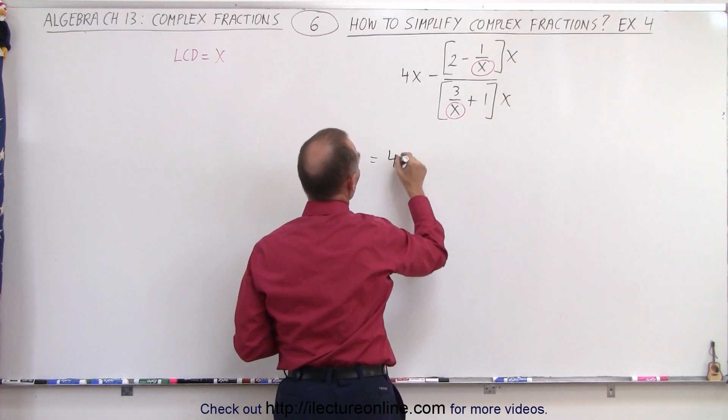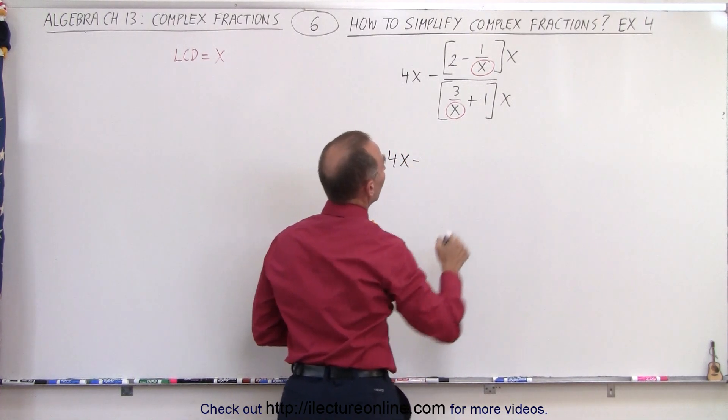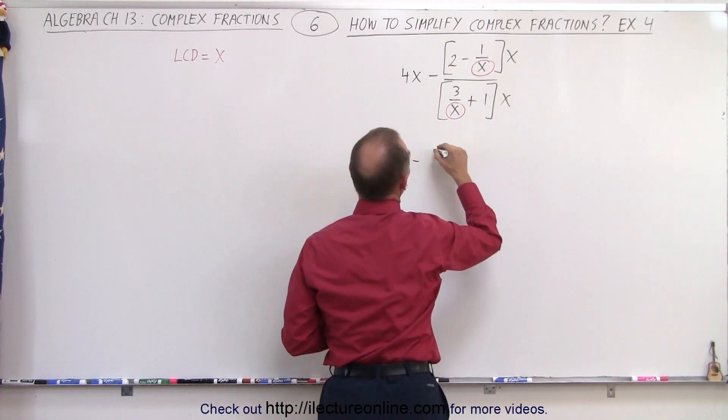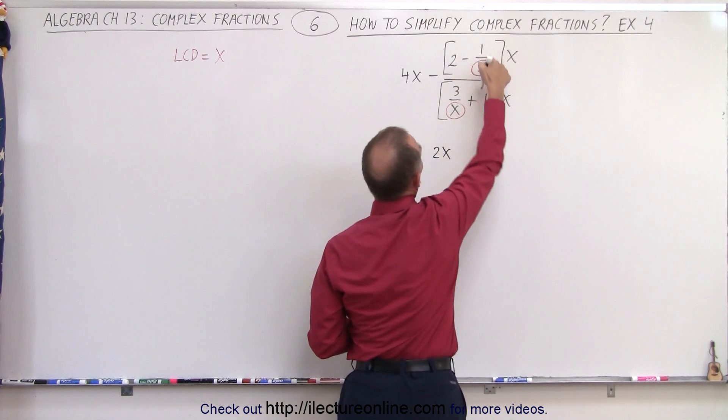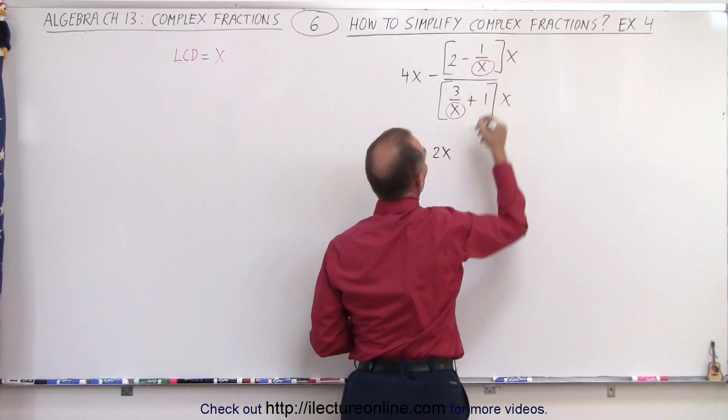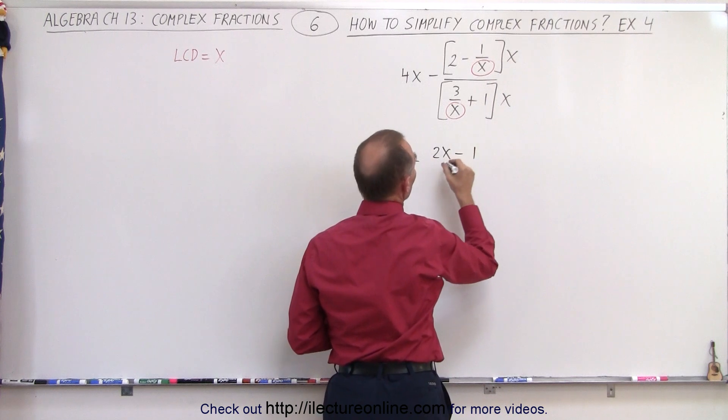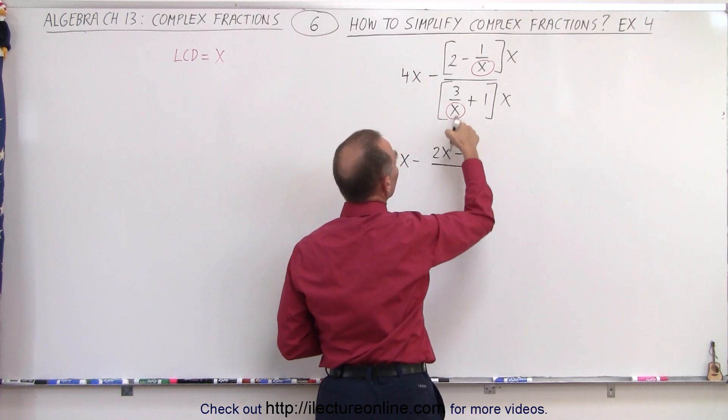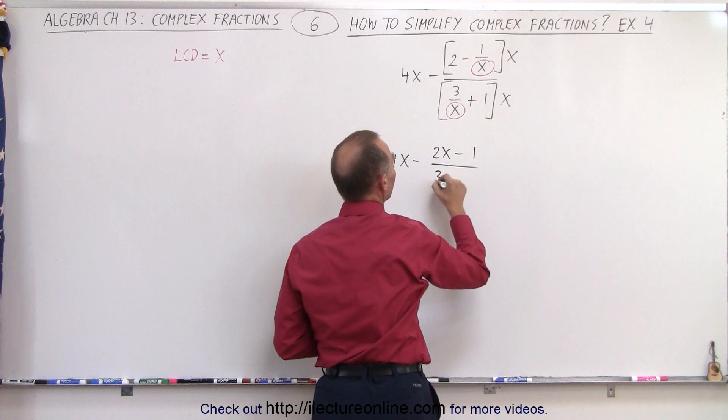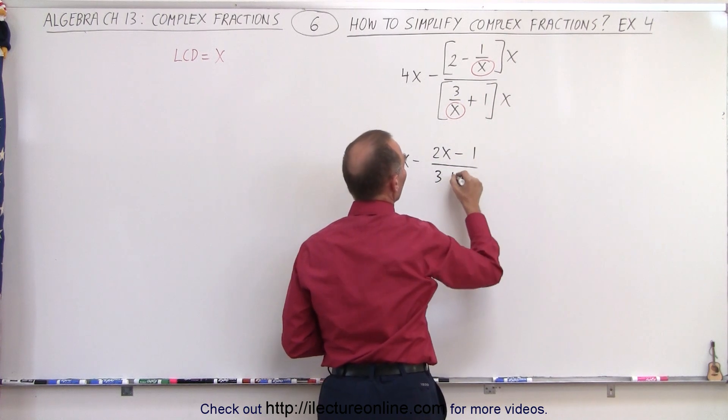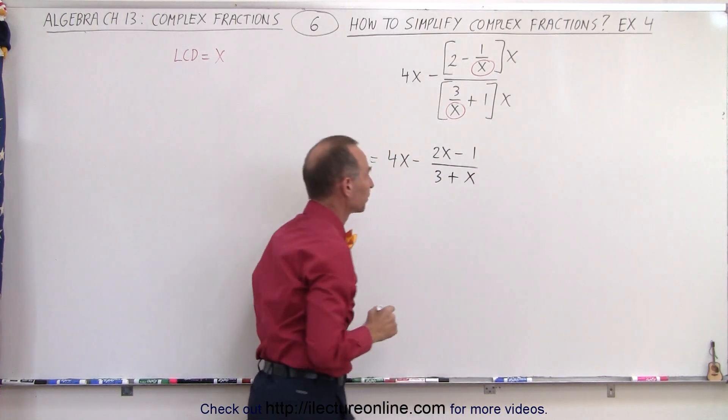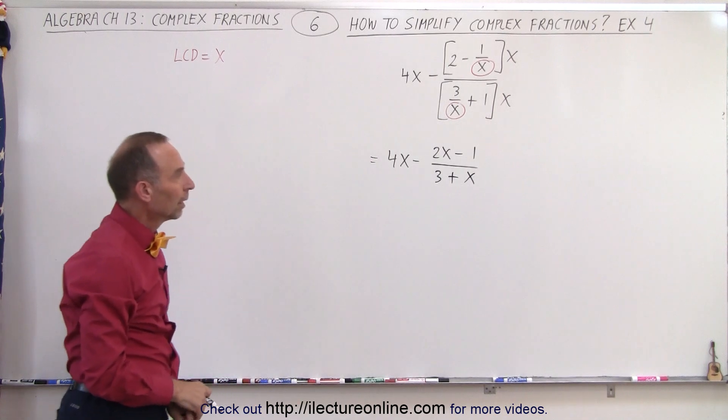So this becomes 4x minus 2 times x, that's 2x, and minus 1 over x times x. Notice the x cancels out. We're left with just the negative 1. In the denominator, 3 over x times x, the x's cancel out. We're left with 3, plus 1 times x, plus x.